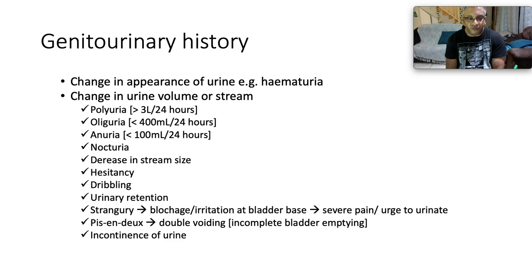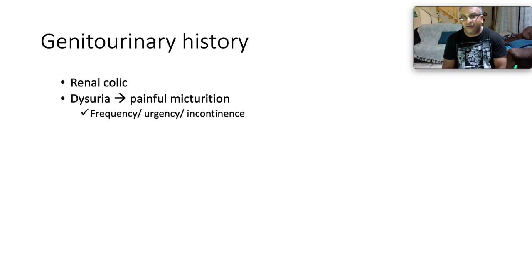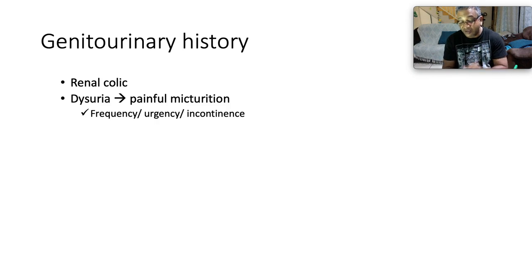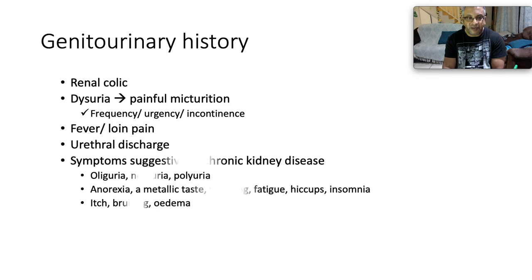Another symptom is double voiding, implying incomplete bladder emptying, as well as incontinence of urine. Renal colic is typically described as loin-to-groin pain, speaking to obstruction causing colicky pain in the ureters — most commonly a renal stone. Also inquire about dysuria, which speaks to painful micturition, coupled with frequency, urgency, incontinence, fever, loin pain, and any urethral discharge.